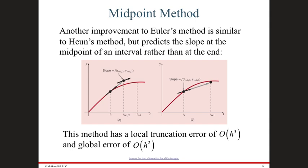Heun's method has better error performance. The local truncation error is order h-cubed, compared to h-squared in Euler. The accumulated error is order h-squared, compared to order h in Euler. Since we always choose h as a small value, squaring it means the error is even smaller — so order h-squared is better than order h.